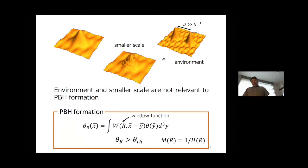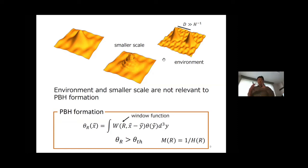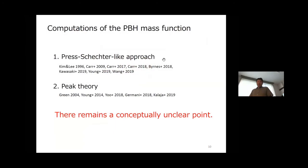We achieve this by introducing a window function. Here theta(y) represents the original density perturbation, and we introduce a window function that effectively cuts off the smaller scales and the environmental effect. The smoothed perturbation theta_R represents perturbations dominated by the scale R.